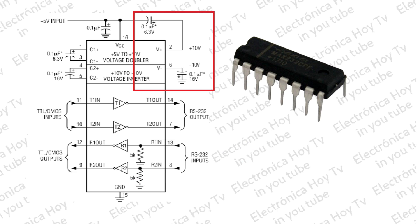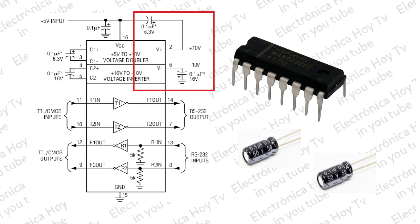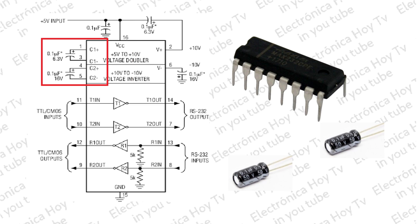Las patillas 2 y 6, más VS y menos VS, son las que controlan las bombas de carga con referencia a tierra. Por esta razón hay que saber polarizar los condensadores externos: conectando el terminal negativo de un condensador a la patilla 6 y el terminal positivo del otro condensador a la patilla 2. Igualmente, es necesario conectar otros dos condensadores, uno entre las patillas 1 y 3, y el otro entre las patillas 4 y 5, polarizados como se indica en la figura.